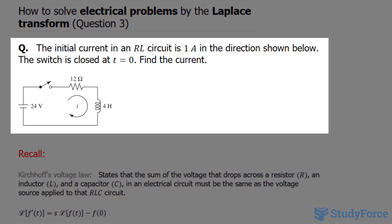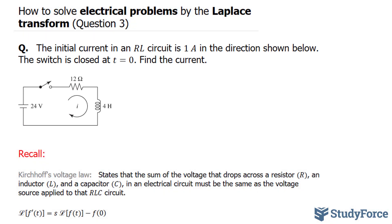The question reads, the initial current in an RL circuit is 1 amp in the direction shown below. The switch is closed at time equal to zero. Find the current. Take a look at the circuit, and notice that the current is traveling in this direction.